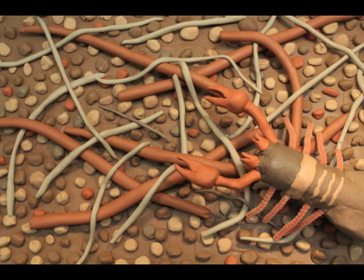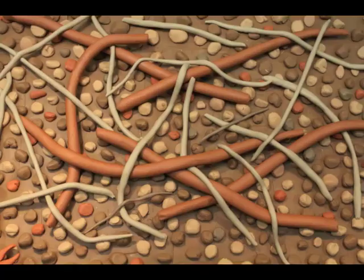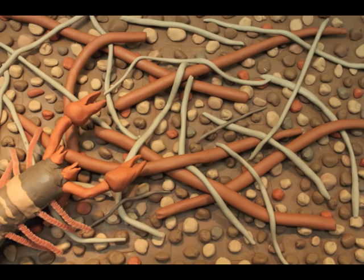A pseudoscorpion picks its way through the thick layer of organic detritus covering the forest floor. Less than a centimeter long, the tiny arachnid lacks the stinging tail of a true scorpion.